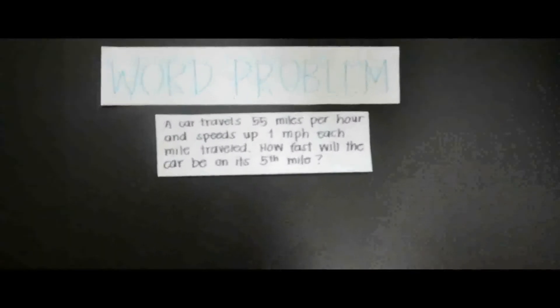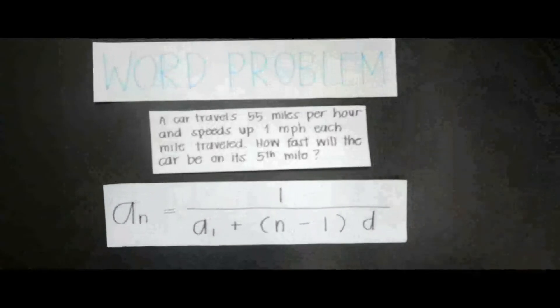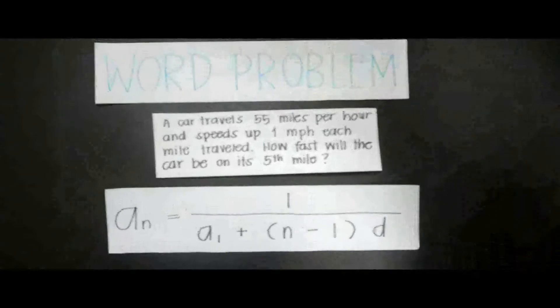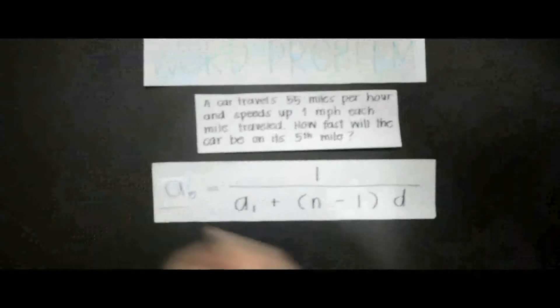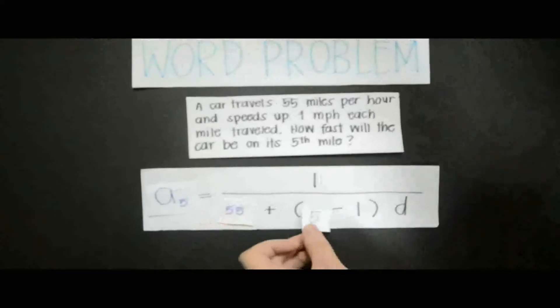Let's try a word problem. A car travels 55 miles per hour and speeds up 1 mile per hour each mile traveled. How fast will the car be on its 5th mile? Now let's substitute the formula. a_n will become a_5, a_1 will become 55, n will become 5, and d will become 1.